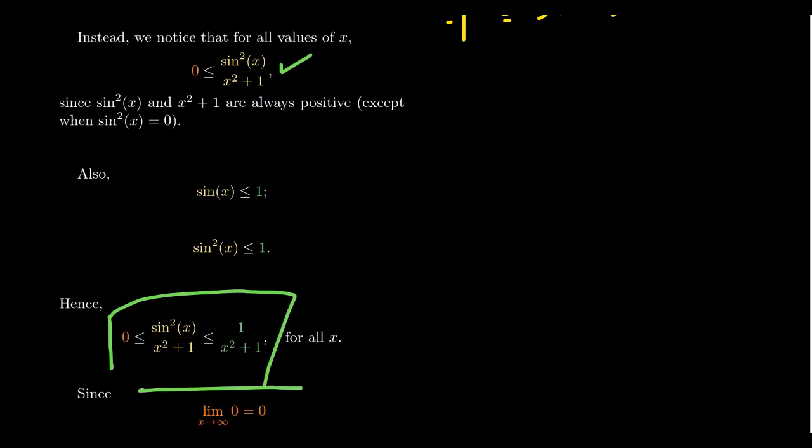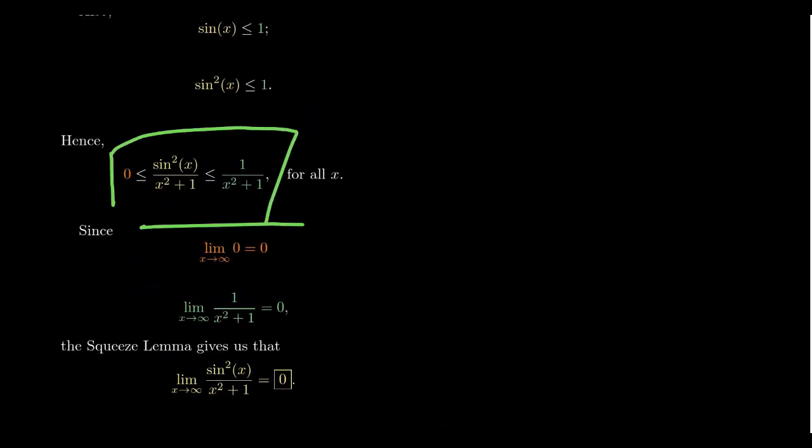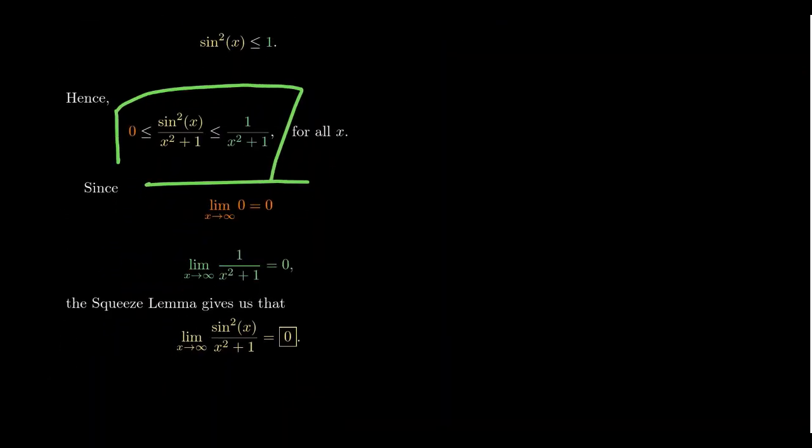This is the squeeze we want for the typical squeeze theorem. You'll notice that sine squared x over x squared plus 1 is sandwiched between 0 and 1 over x squared plus 1. We'll take the limit as x approaches infinity. For the constant function 0, the limit will still be 0. So we see that this function approaches 0.